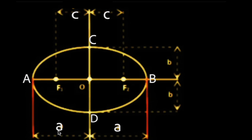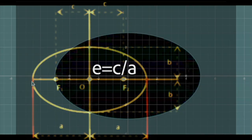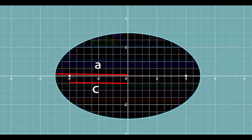The eccentricity formula we gave you earlier is c upon a. Look, c here is 4 and a is 5, so eccentricity is c upon a, which is 4 upon 5.